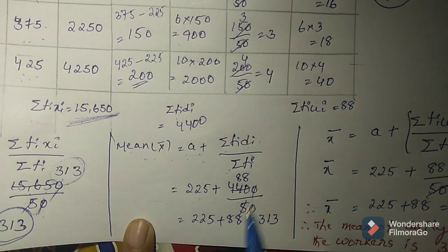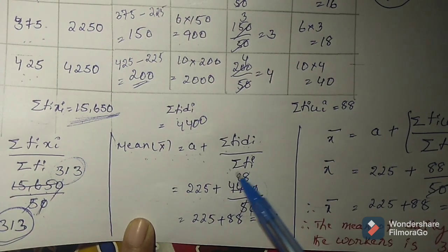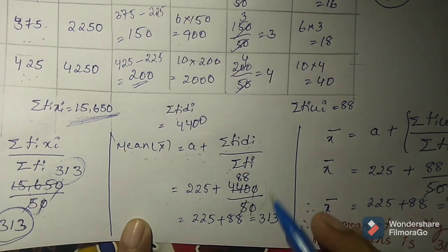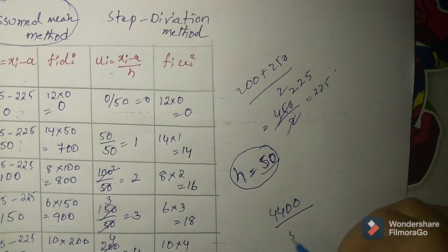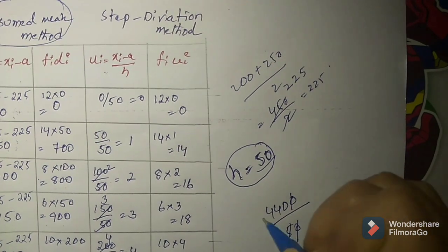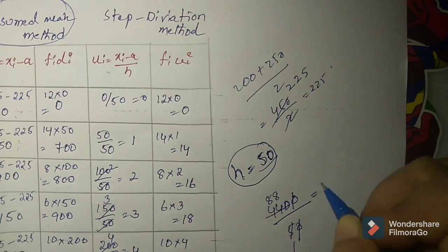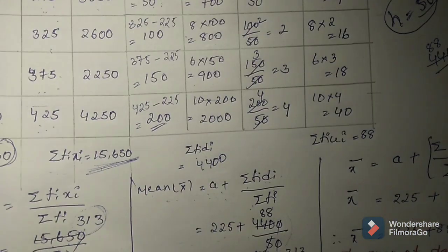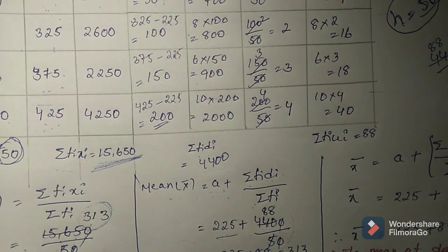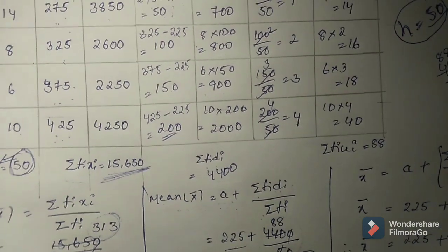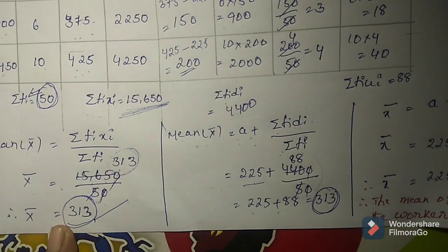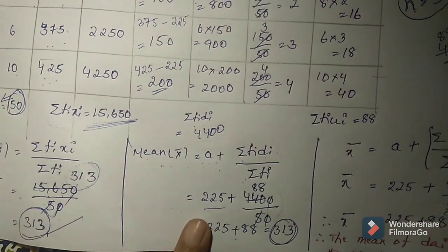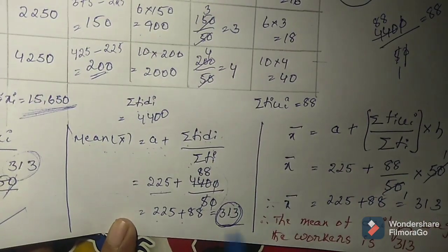Substitute in the assumed mean formula: x̄ equals a plus sigma fi di by sigma fi. So x̄ equals 225 plus 4400 by 50. Dividing 4400 by 50 gives 88. Therefore x̄ equals 225 plus 88 equals 313. Using both the direct method and assumed mean method, we get the same mean value of 313.